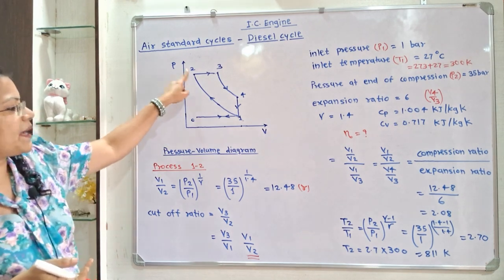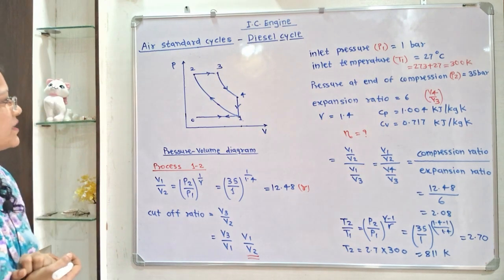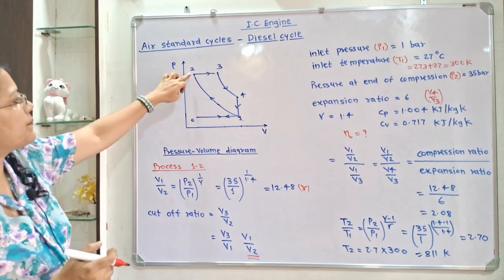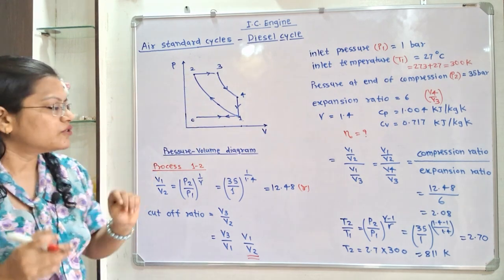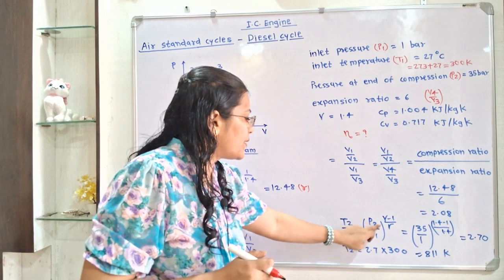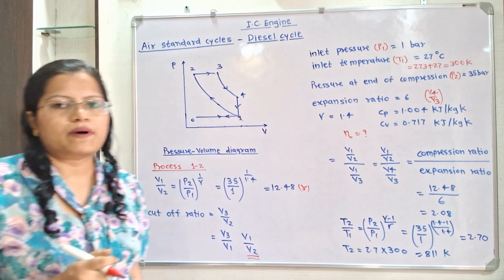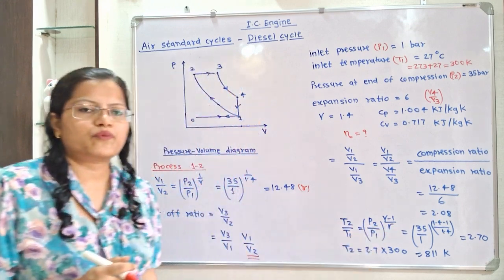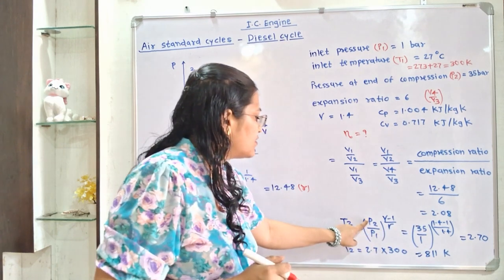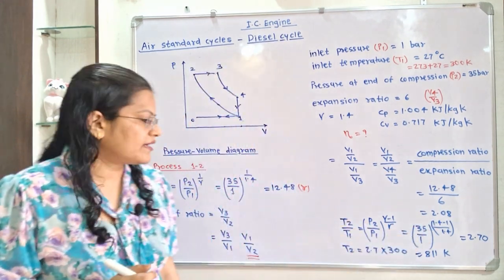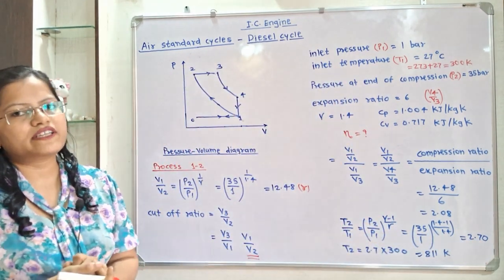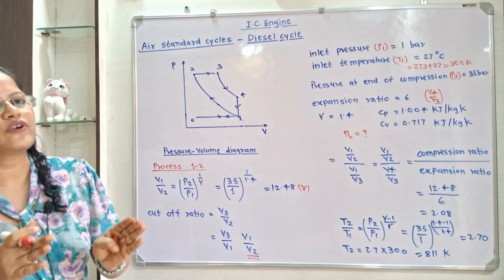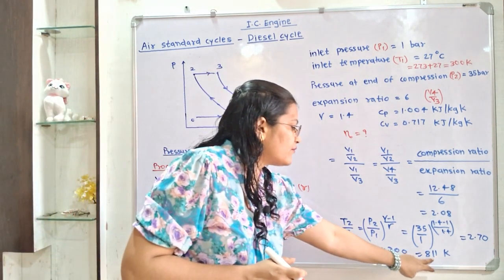We will calculate the temperature at point 2. We have the relation T2 by T1 equals P2 by P1 raised to gamma minus 1 by gamma. Solving gamma minus 1 over gamma: 1.4 minus 1 divided by 1.4. Then 35 raised to this power equals 2.70. Multiplying by T1 (300 Kelvin), T2 is equal to 811 Kelvin.